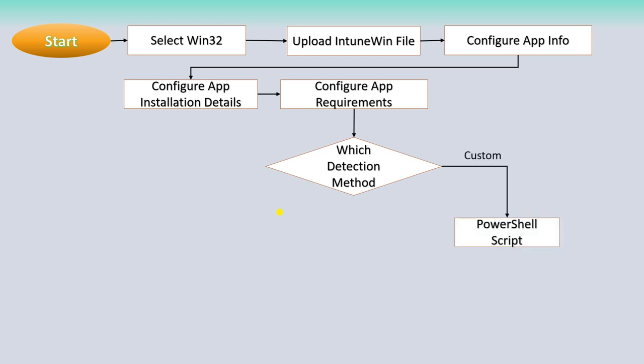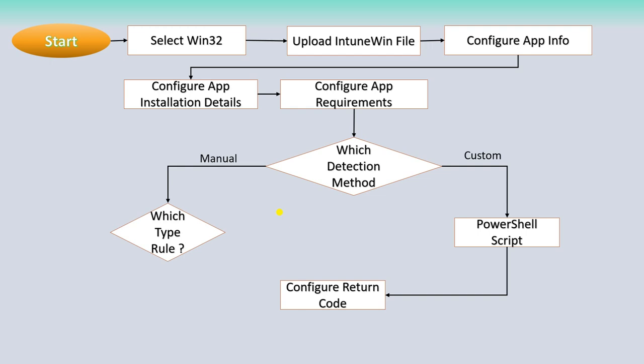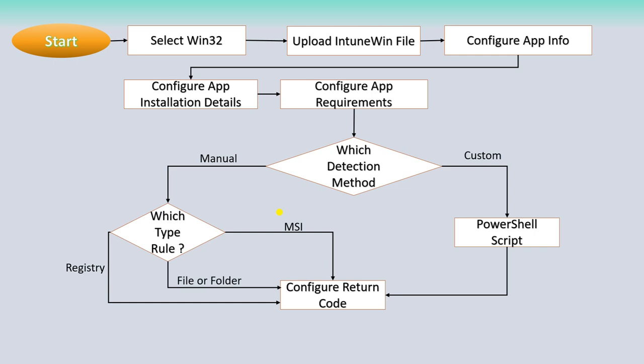Now here is a condition — which detection method to use. If it is custom, you need to use a PowerShell script. Then configure the return code. If it is manual, choose which type of rule you want to use. If it is MSI, you can use the MSI rule type and then configure the return code. You can also configure a rule based on the registry, or if it is a file or folder, and in each case it goes back to configure the return code.